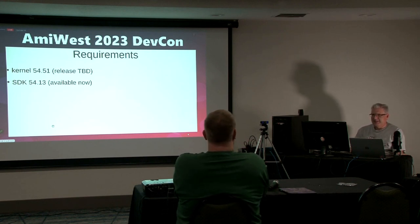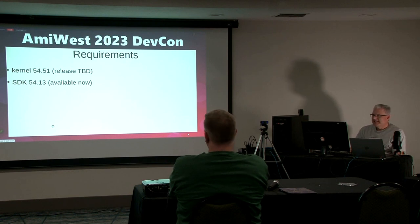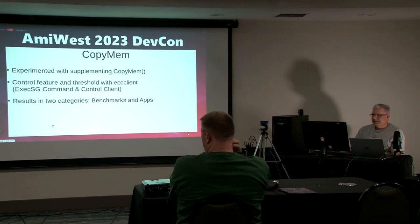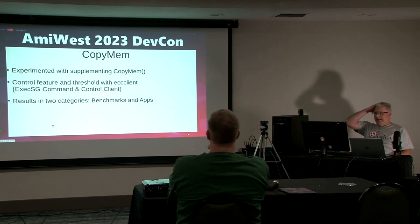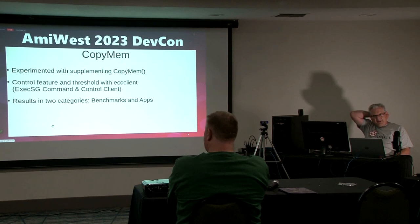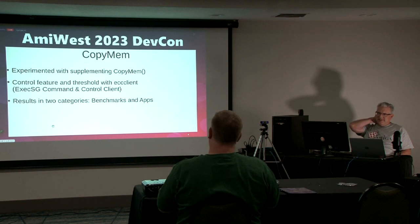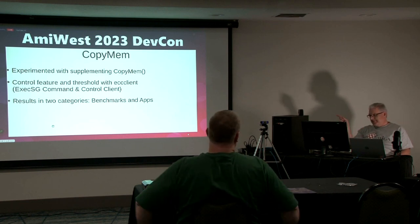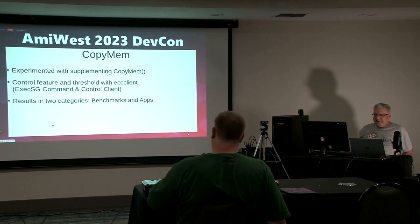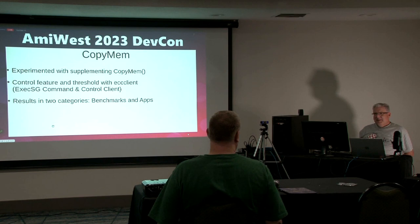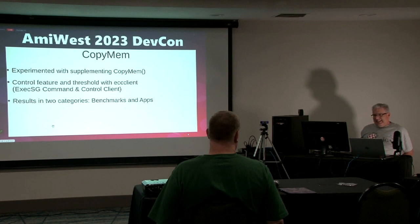I'm going to have to talk to the team about getting the SDK released alongside the kernel, hopefully coordinated. Or I'll just throw it up if we can't get it done quickly. It's just some header files, an autodoc, and examples — so it's not a huge problem. We've been experimenting with applying the DMA engine to CopyMem. CopyMem is a core OS routine that copies memory from A to B, and the idea is you should be able to get a speed increase using the DMA engine — the classic old idea. They even had CopyMemQuick trying to make it faster.